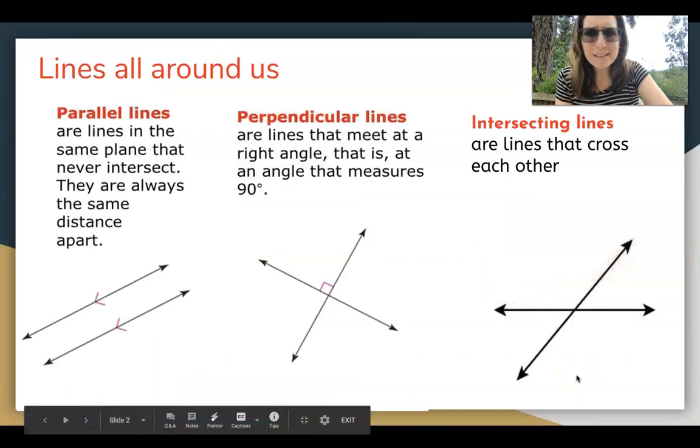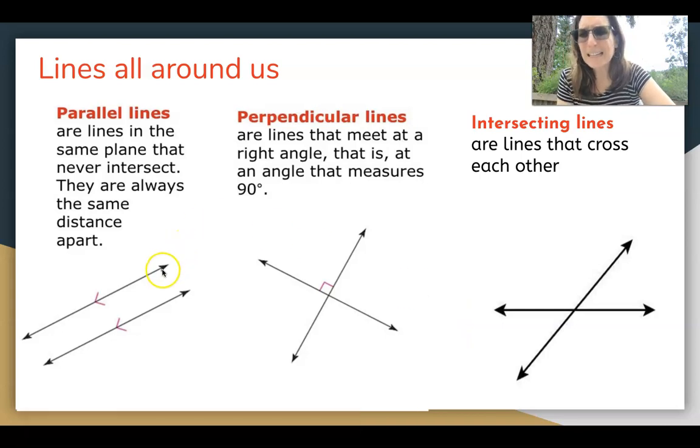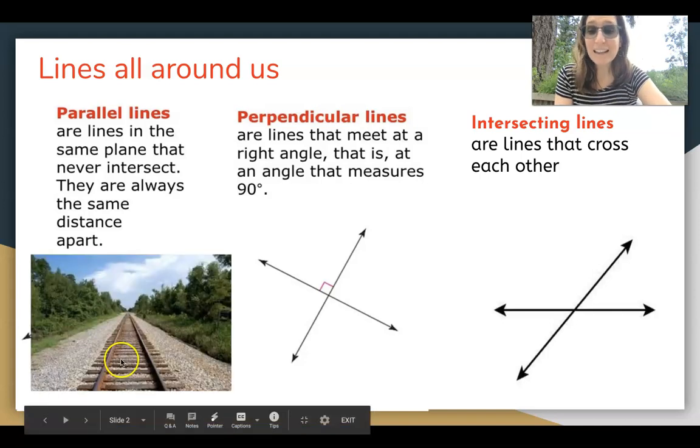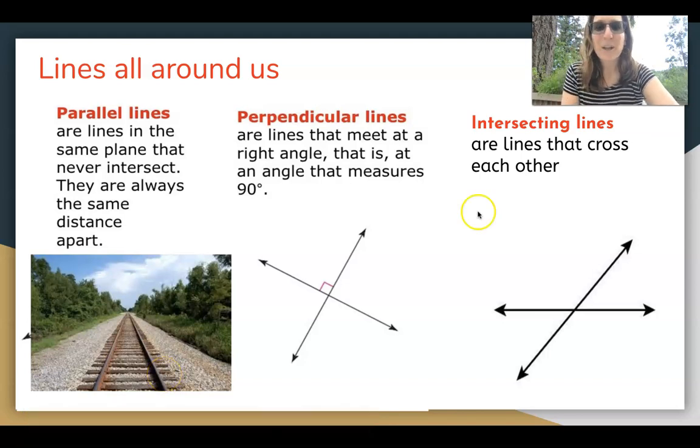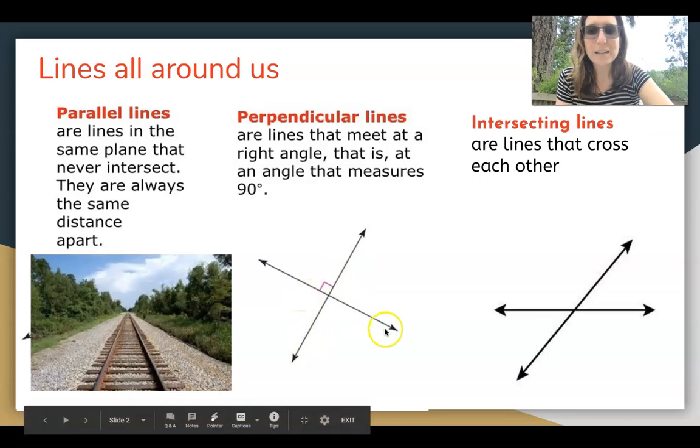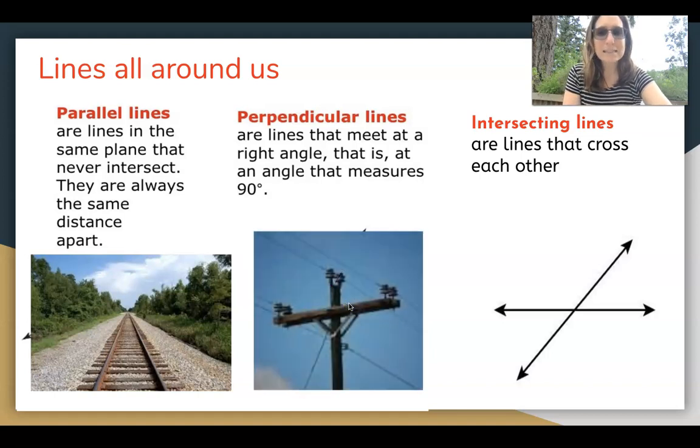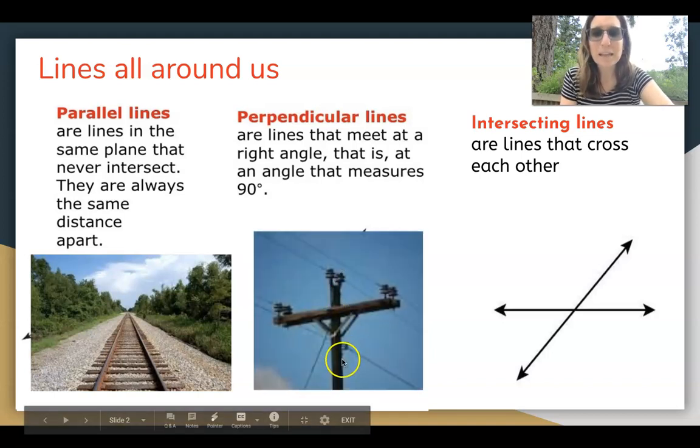Lines are everywhere around us. We have either lines that are on the same plane that never intersect and those are called parallel lines. Parallel lines can be on a railroad track. These two rails will never intersect otherwise the train would crash, right? Another pair of lines that do intersect and form 90 degree angles at the corners are called perpendicular lines. These might be a set of power lines that you see up in the air.